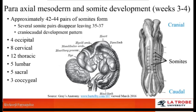You may be wondering why there are eight cervical somites but only seven cervical vertebrae. As they split and divide, one of them goes off to join the occipital somites.